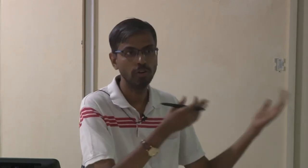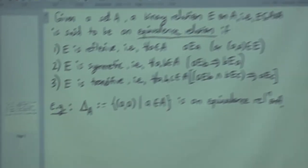Let us start. We have seen the definition of an equivalence relation in class. It is a binary relation, meaning E is a subset of A cross A where A is any set, and it is an equivalence relation if it is reflexive, symmetric, and transitive.